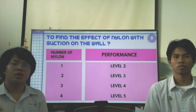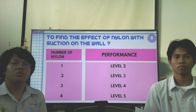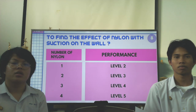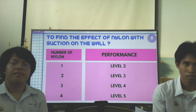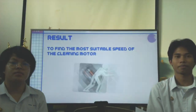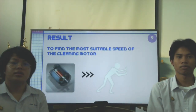Number of nylon: one, two, three, four — performance level two, level three, level four, level five. Results to find the most suitable speed after cleaning motor.